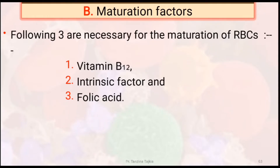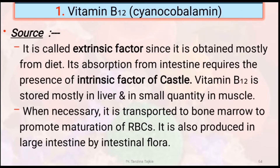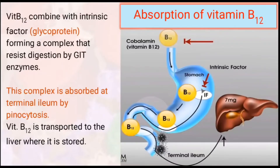Maturation factors are vitamin B12, intrinsic factor, and folic acid. Vitamin B12, also called extrinsic factor, is obtained mostly from diet. Its absorption from the intestine requires the presence of intrinsic factor. Vitamin B12 is stored mainly in the liver and small quantities in muscle. Where necessary, it is transported to the bone marrow to promote maturation of RBCs. It is also produced in the large intestine by intestinal flora. For absorption, vitamin B12 combines with intrinsic factor — also a glycoprotein — to form a complex that resists digestion by GIT enzymes. This complex is absorbed at the terminal ileum by pinocytosis.